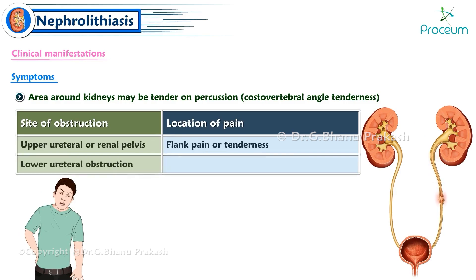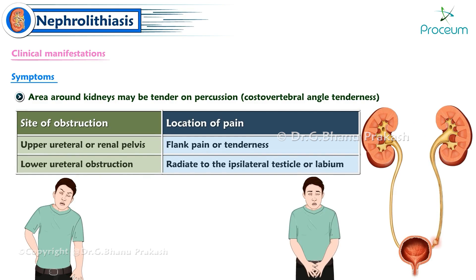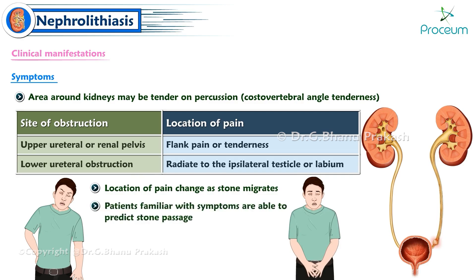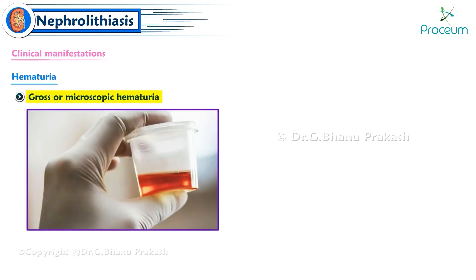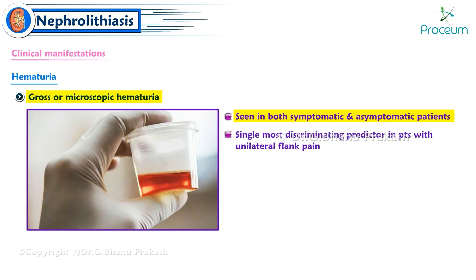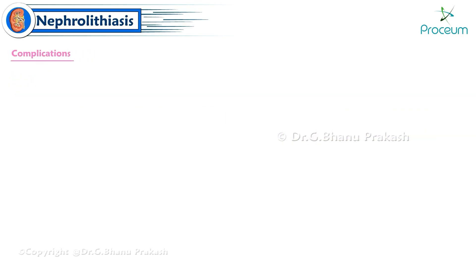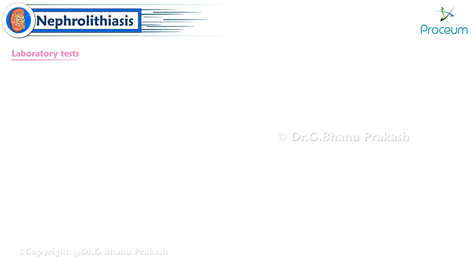The site of obstruction determines pain location: upper ureteral or renal pelvic obstruction causes flank pain or tenderness, while lower ureteral obstruction causes pain that may radiate to the ipsilateral testicle or labium. Pain location may change as the stone migrates. Hematuria — gross or microscopic — occurs in the majority of symptomatic patients and is the single most discriminating predictor of a kidney stone in those with unilateral flank pain. Nephrolithiasis may lead to persistent renal obstruction and permanent renal damage if untreated.